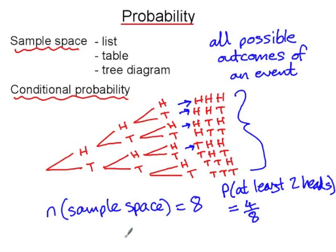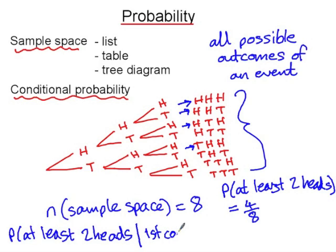So four out of the eight possibilities have at least two heads in them. If I change it so that I say, well, given that the first coin is a head, what's the probability of achieving at least two heads? Given that, this vertical line means given that, the first coin is a head. So I've placed a condition on my sample space.